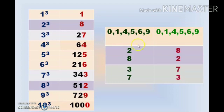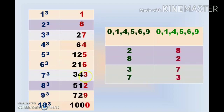The remaining numbers are only 4: 2, 3, 7, and 8. There is also a tip to remember these. If you notice, for the number 2 the cube ends with 8, and for the number 8 the cube ends with 2. Similarly, for the number 3 the cube ends with 7, and for the number 7 the cube ends with 3. We call these the flip-flop numbers: 2 and 8, and 3 and 7.